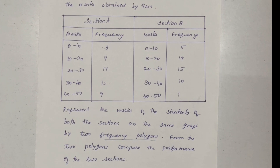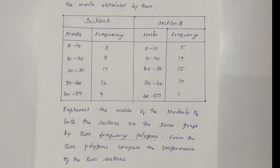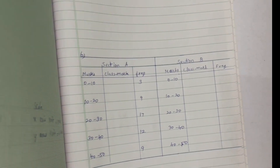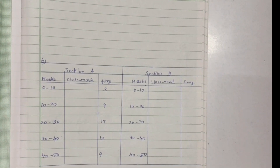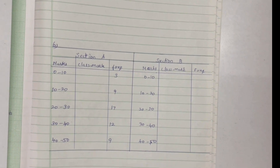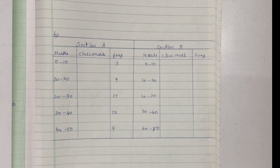A frequency polygon requires the class interval. What we need to get is the class mark — for Section A and for Section B. We need to calculate the class mark by summing the two limits and dividing by two.